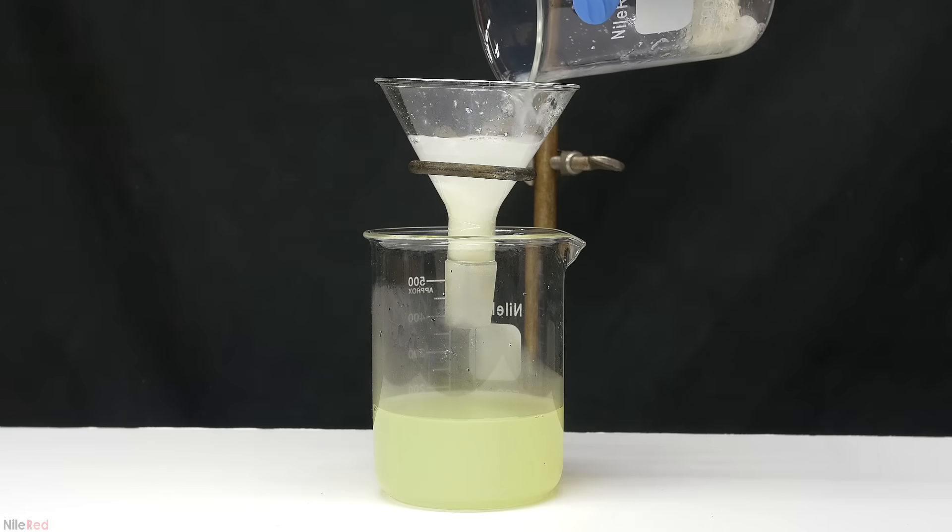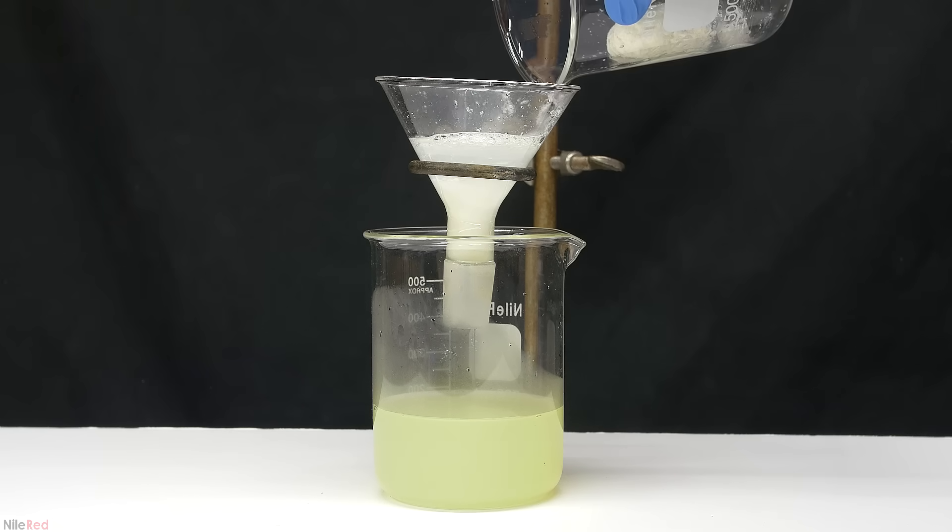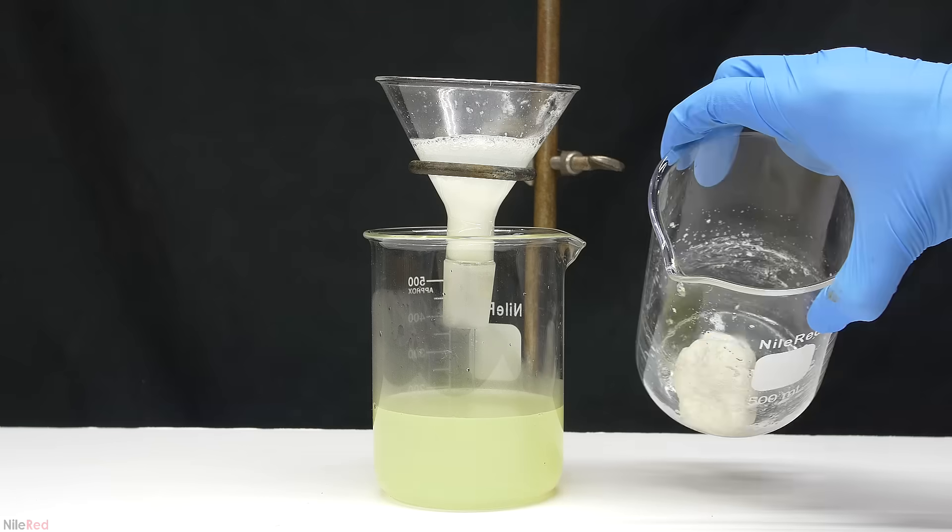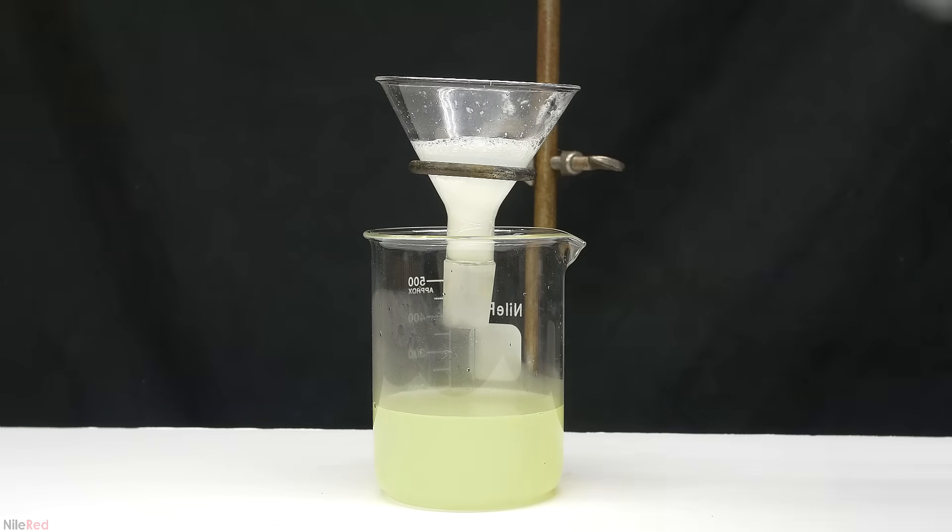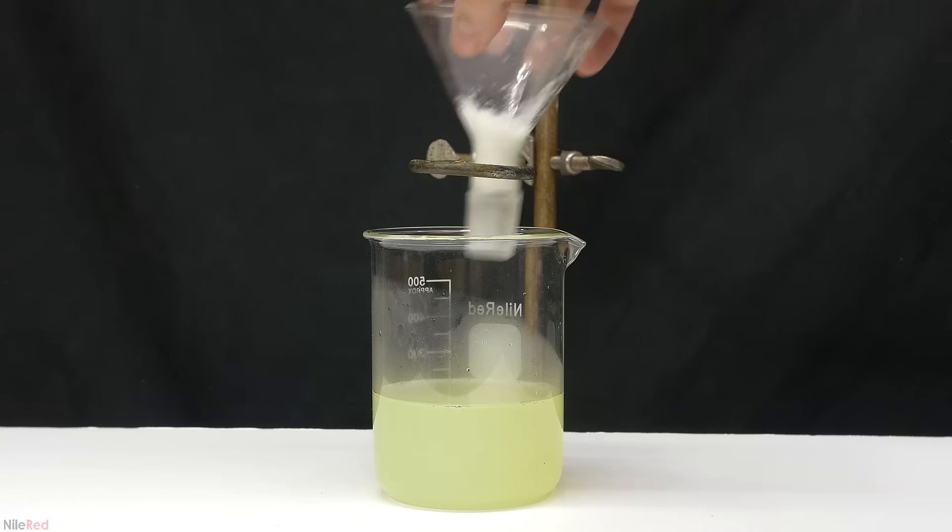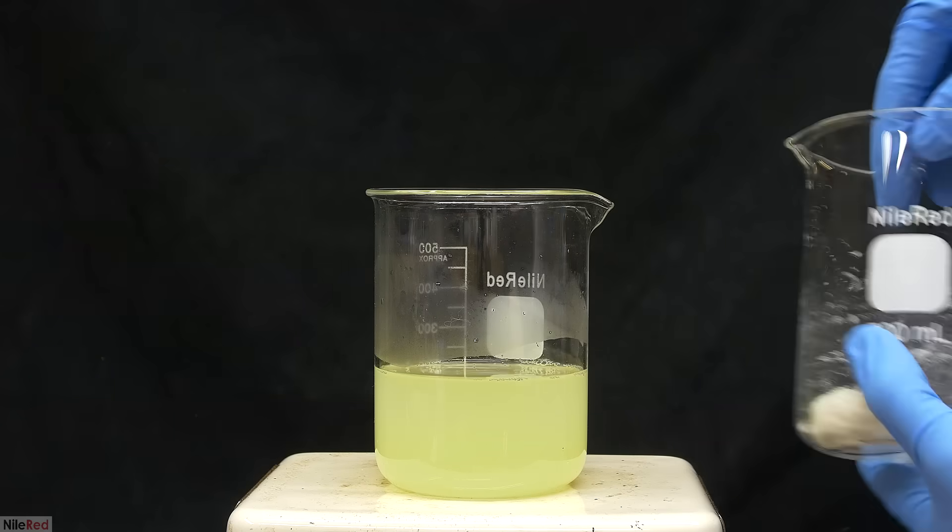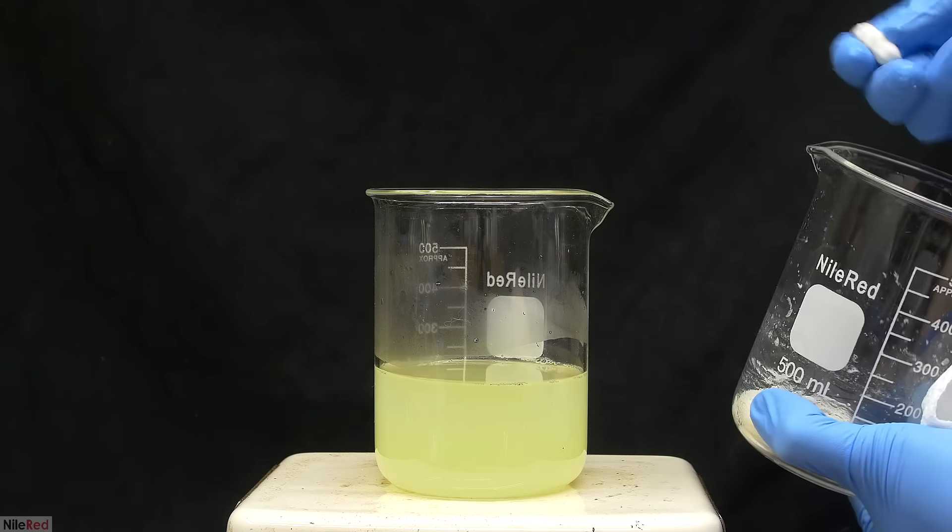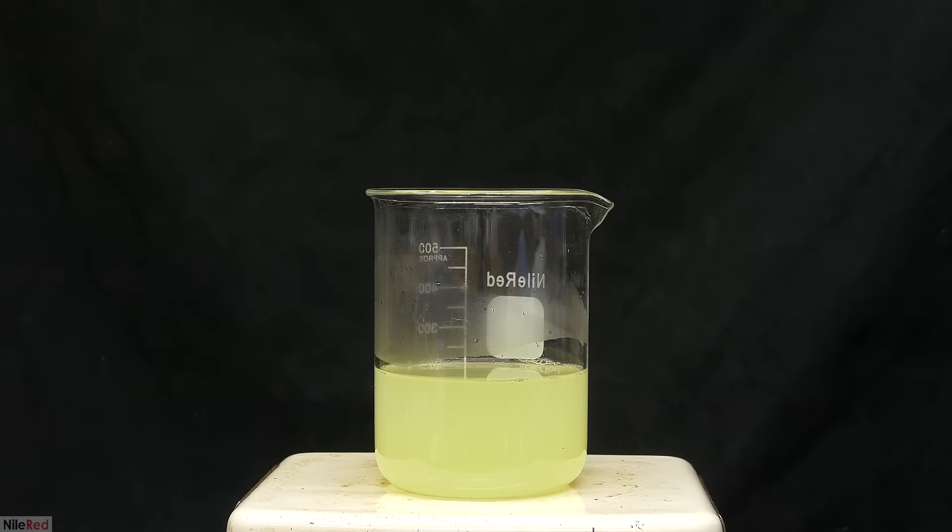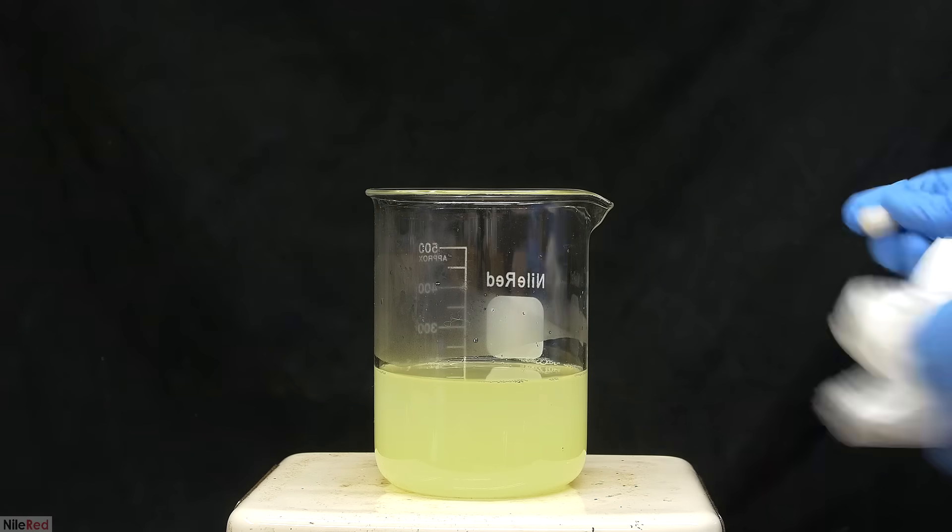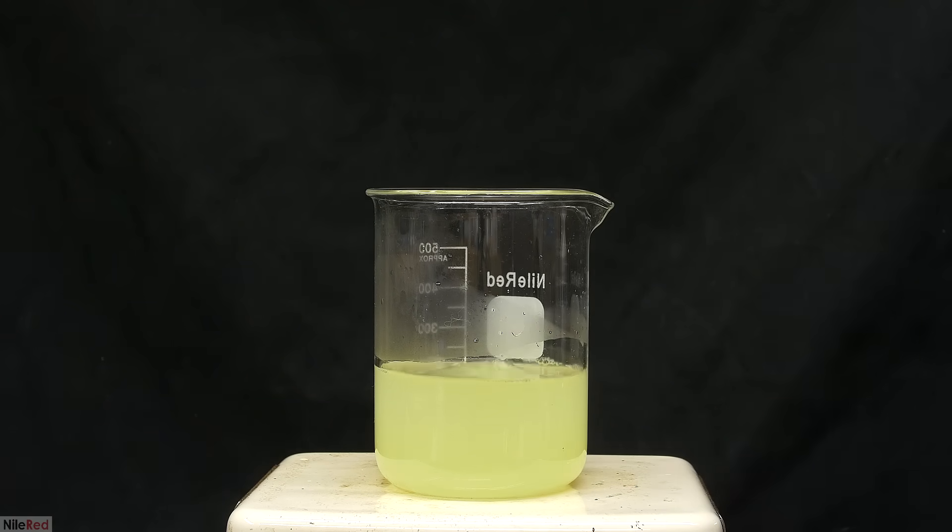Once everything is filtered through, I wash the casein and the filter with a little bit of hot water. The funnel is then removed, and the solution is placed back on the hot plate. The stir bar is removed from the beaker with the casein, and it's quickly cleaned using a paper towel. For the time being, the casein is placed on the side, and I cover the beaker with some plastic wrap.